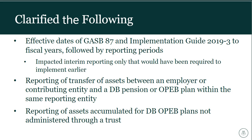The next item clarified relates to the reporting of assets accumulated for defined benefit OPEB plans not administered through a trust. GASB Statement 84 requires reporting of assets accumulated for providing pensions or OPEB through plans not administered through a trust meeting criteria related to GASB Statements 73 and 74. When Statement 84 introduced the word 'control,' it unintentionally limited the applicability of some requirements in those previous standards, potentially scoping some plans out of being reported. Statement 92 clarified what that was actually intending to do.